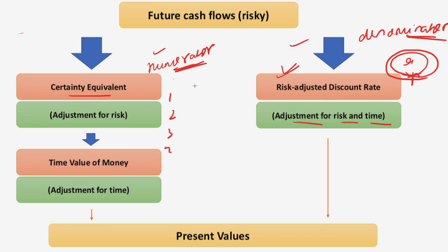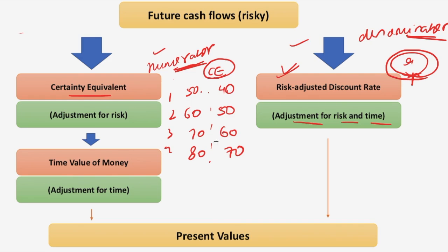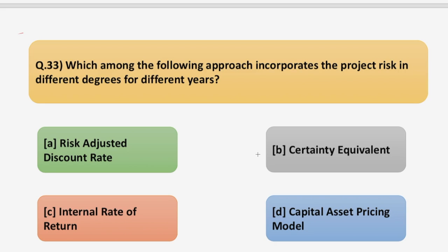For example, if there are cash flows for four years — say 50,000; 60,000; 70,000; and 80,000 — based on the riskiness of each cash flow, the certainty equivalent is calculated and the cash flows are deflated accordingly. For example, these might be deflated to 40,000; 50,000; 60,000; and 70,000 based on the risk involved. As you can see, a different degree of risk for different years is considered in the Certainty Equivalent approach, so the answer to this question is option B — Certainty Equivalent.